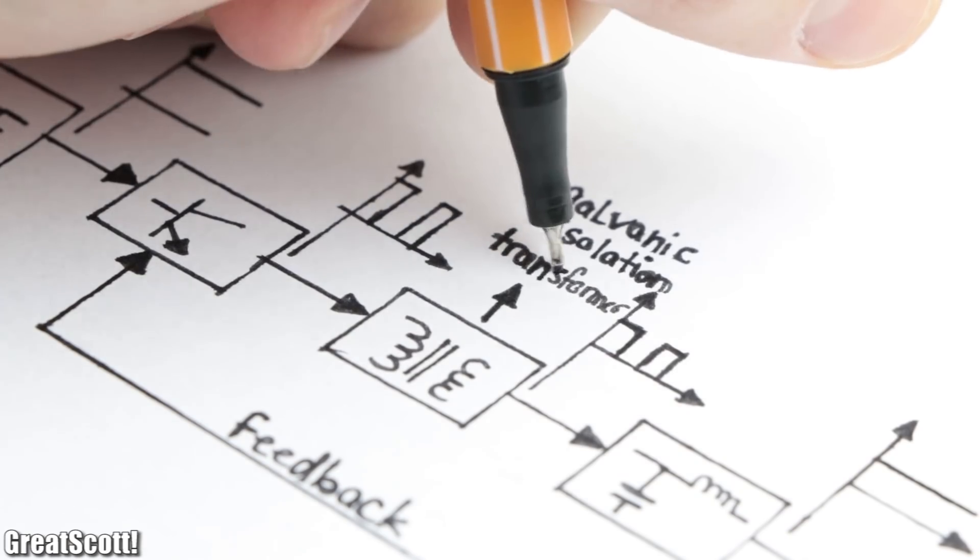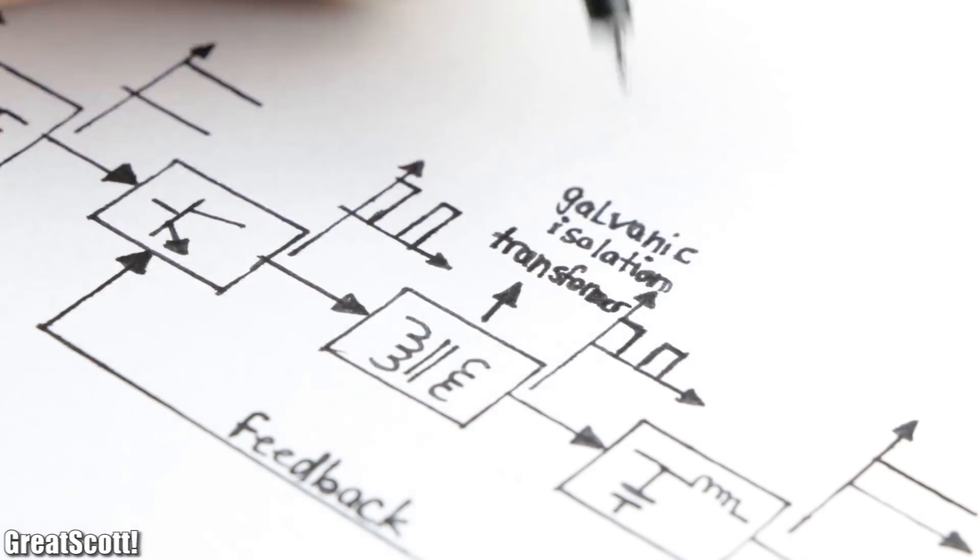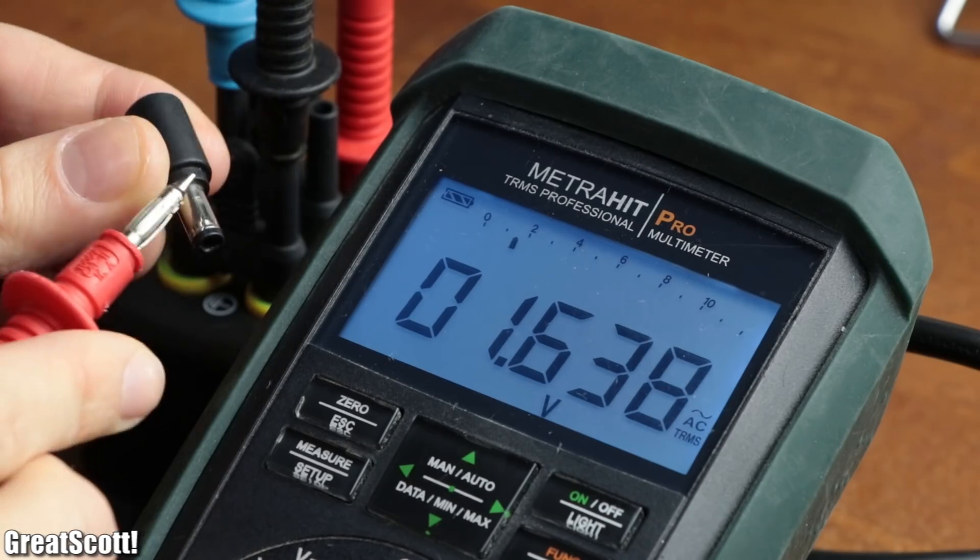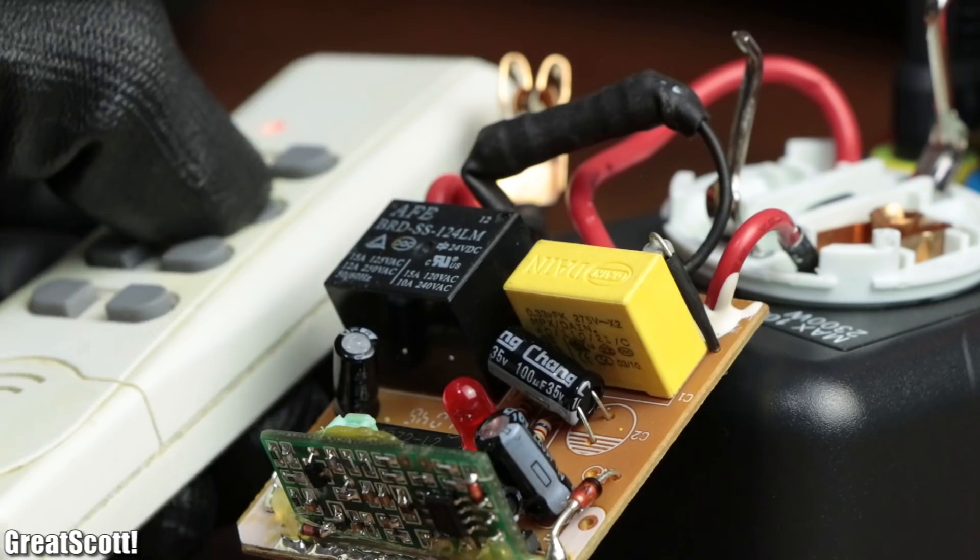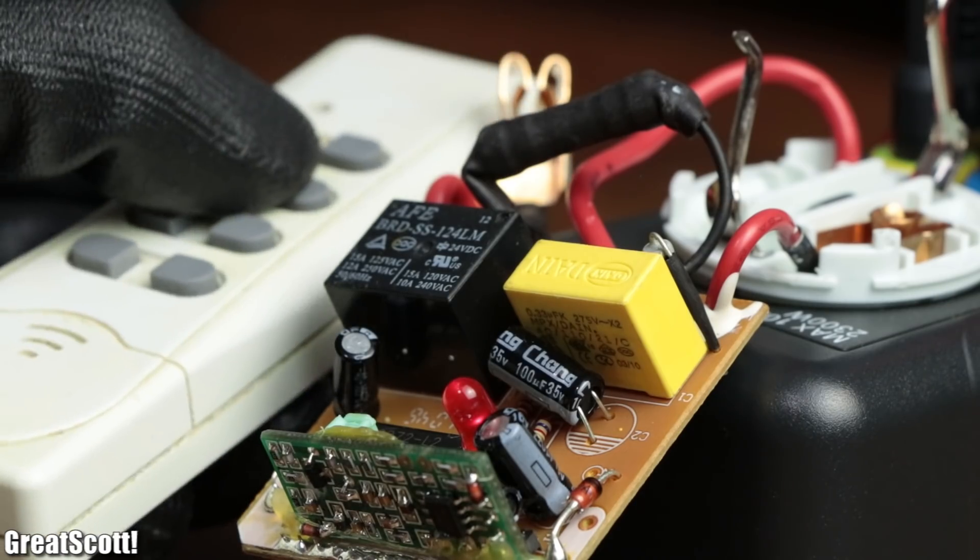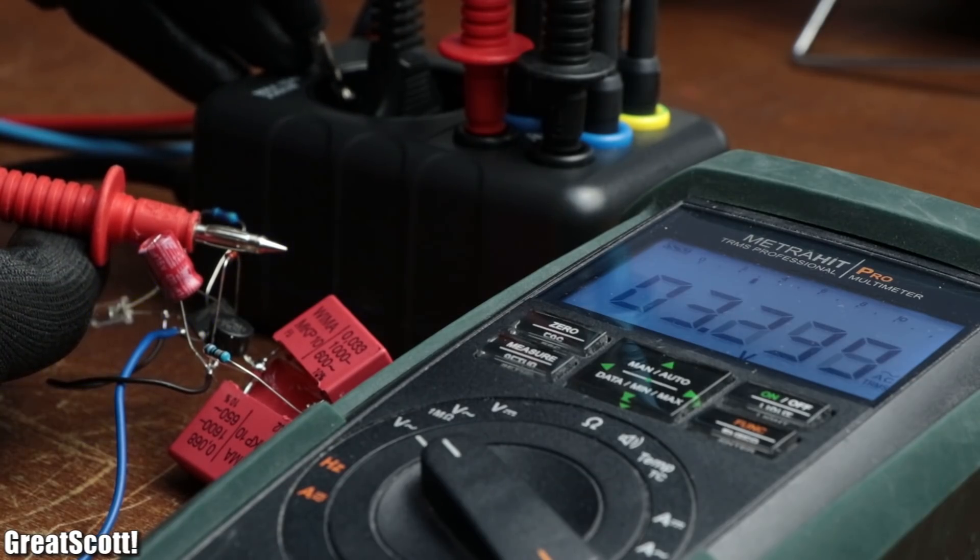Switched mode power supplies on the other hand feature a galvanically isolated output, meaning it does not come with a dangerous potential to earth which we could touch. And with that being said, you should now be familiar with capacitive dropper circuits and understand why you should never touch them with bare hands.